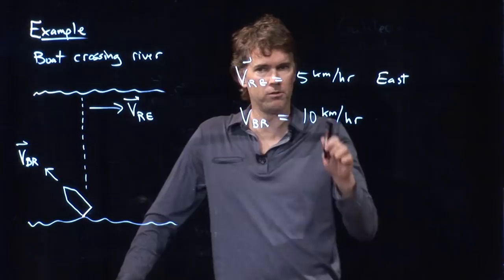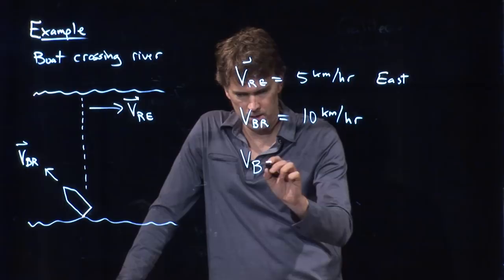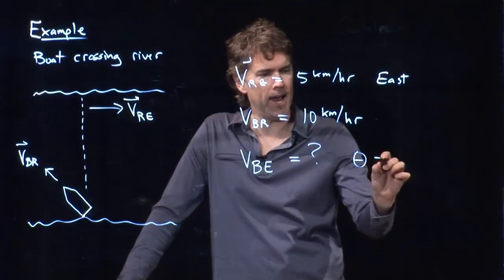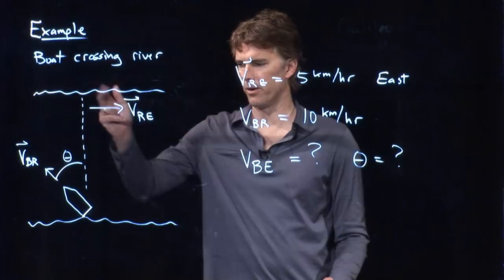Okay, so RE means river relative to earth, BR means boat relative to river. And we want to find what is the speed of the boat relative to the earth and at what angle do we need to orient it? Namely, this angle right here. And the goal is to go straight across the river. That's the caveat here.